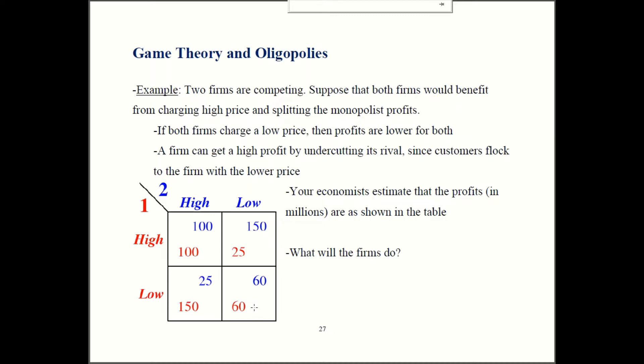Now if one firm charges the low price and the other firm charges the high price, then the cheaper firm is going to take a lot of customers. So if your price is low and their price is high, your profits are going to be 150 million and they're going to get just 25 million. It's also in reverse. So if you pick the high price, if you're firm one and they pick the low price, you're getting just 25, they get 150.